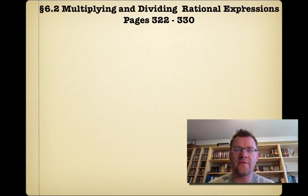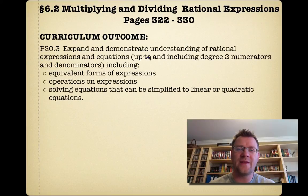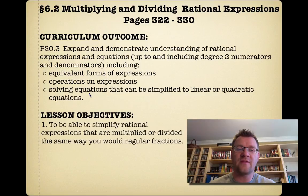Section 6.2 is multiplying and dividing rational expressions, found on pages 322 to 330 in your text. Our curriculum outcome is to expand and demonstrate understanding of rational expressions and equations up to and including degree 2 numerators and denominators, including equivalent forms of expressions, operations on expressions, and solving equations that can be simplified to linear or quadratic equations. Our lesson objective today is to simplify rational expressions that are multiplied or divided the same way that you would regular fractions.